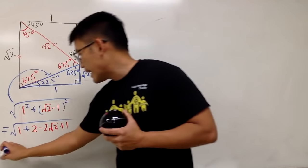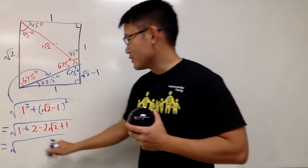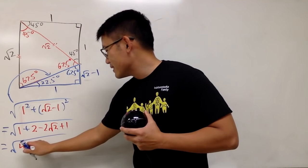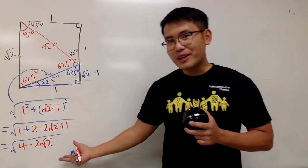And all in all, you see that we have a square root. 1 plus 2 plus 1 is 4. And then minus 2 square root of 2, like this. So this right here is it. And of course, this is the new special special right triangle.